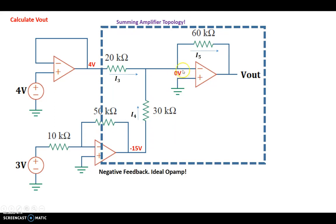Let's apply Kirchhoff's current law at that node right there, which says I3 plus I4, two currents going in equals I5, which is going out. I3 is 4 minus 0 divided by 20,000. I4 is negative 15 minus 0 divided by 30,000. And I5 is 0 minus Vout divided by 60,000. So, if we simplify that, that's what we get.